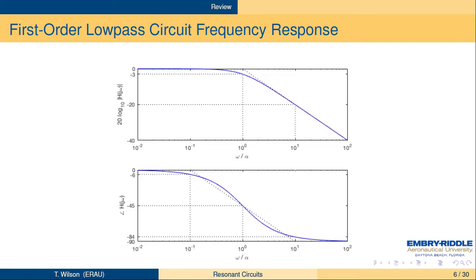The low-pass circuit frequency response as a Bode plot shows a pass band where gain is greater than −3 dB, with a corner frequency normalized to α = 1/RC. Beyond the corner frequency it rolls off at 20 dB per decade, because the ordinary frequency response is proportional to 1/ω. The phase angle starts at 0° at low frequencies — output in phase with input — and reaches −90° at high frequencies, where the output lags the input by 90°.